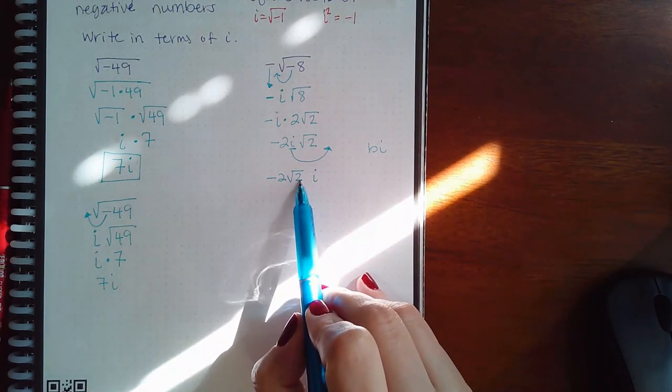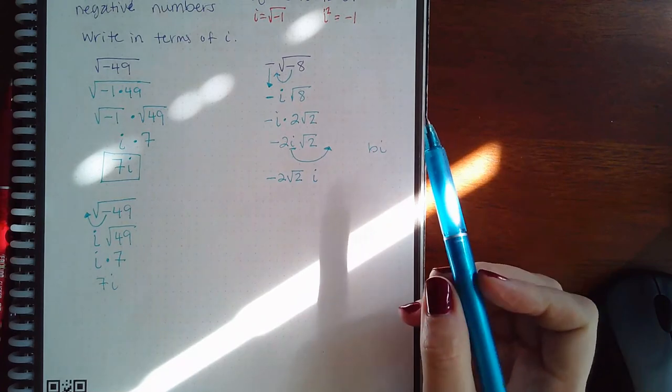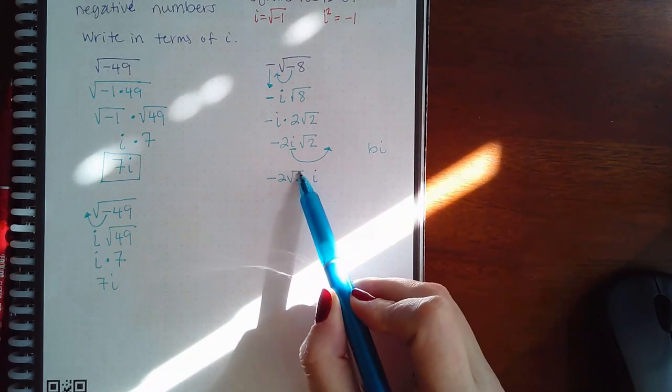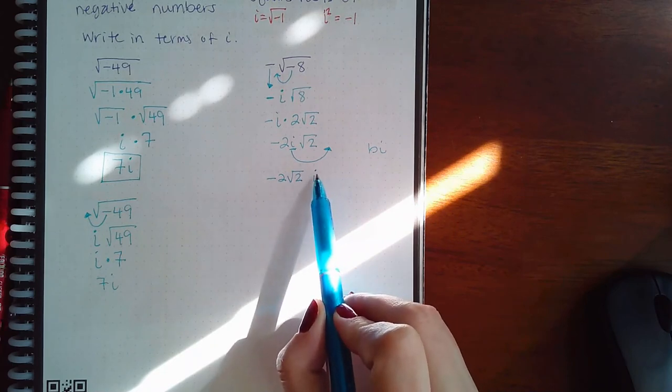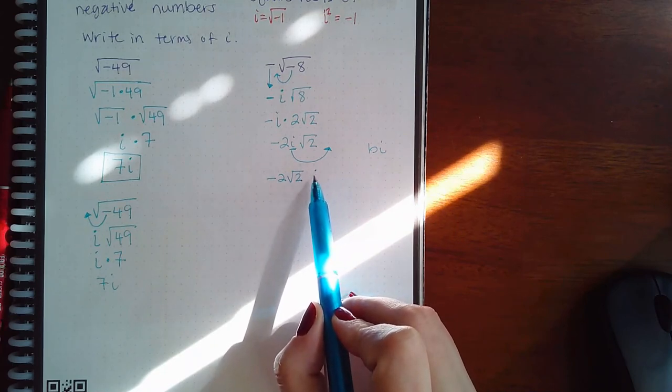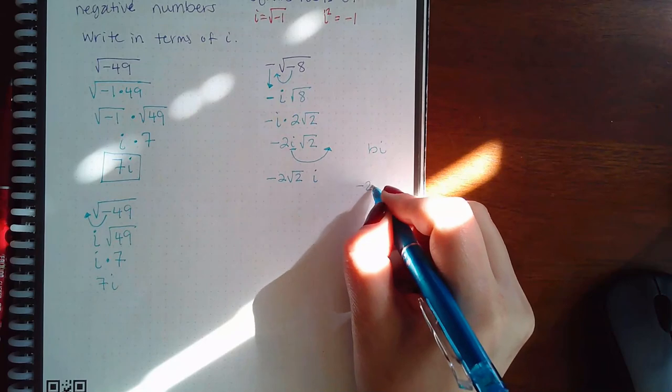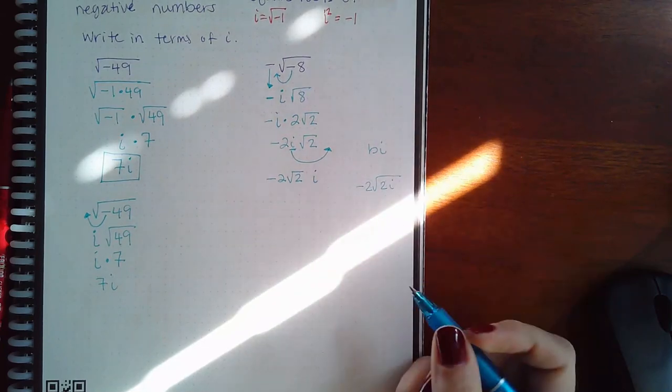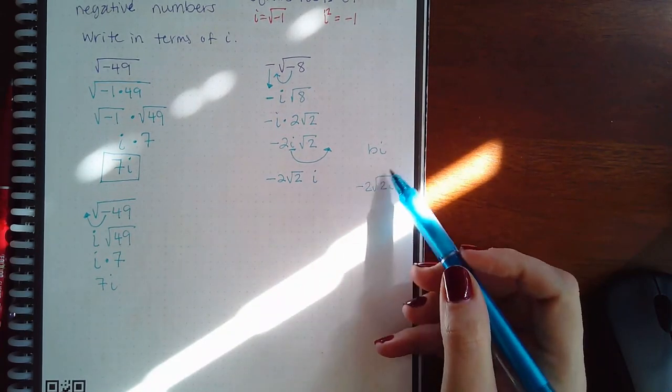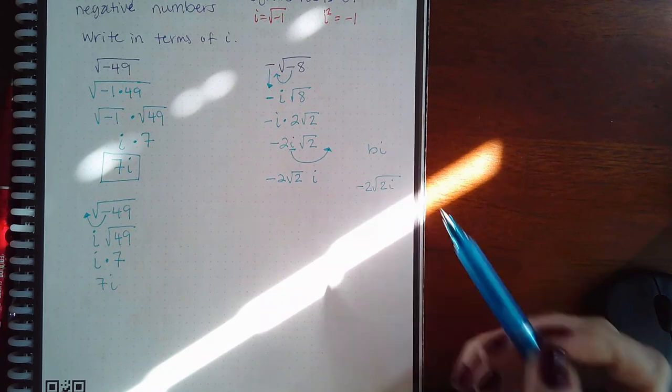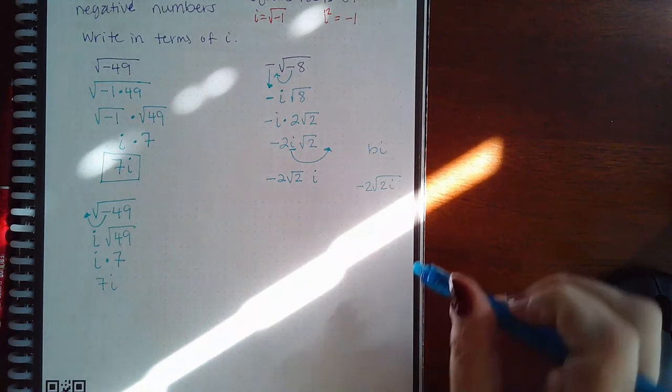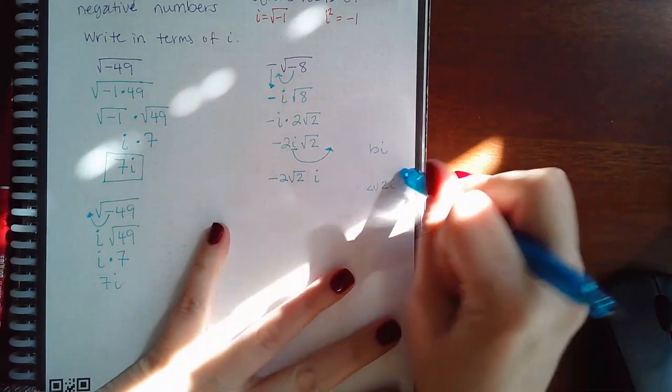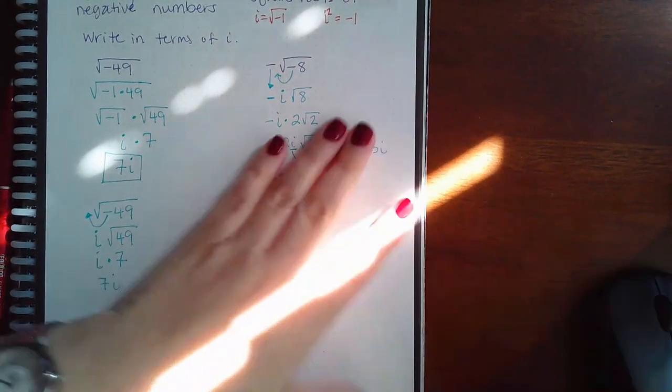But you do need to make sure that this i is not underneath the radical—it has become outside the radical. So make sure that that radical stops after the two and is not on top of the i as well, because that's different. This is not the response. The i should not be inside the radical. Remember the negative came out as an i, so that i is on the outside. So just be careful when you write those in Alex.